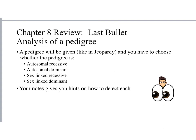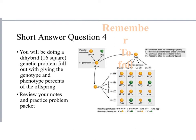One short answer problem is a full dihybrid (16-square) genetic problem. Show all work and calculate both genotype and phenotype percents for the expected offspring. Once you determine the parent genotypes, use FOIL to get the gametes for the top and left of the Punnett square. Use only two letters and remember that offspring genotypes inside the boxes should have four letters.